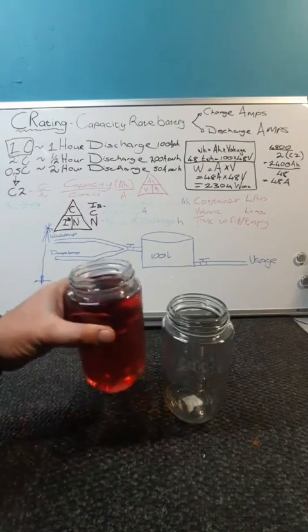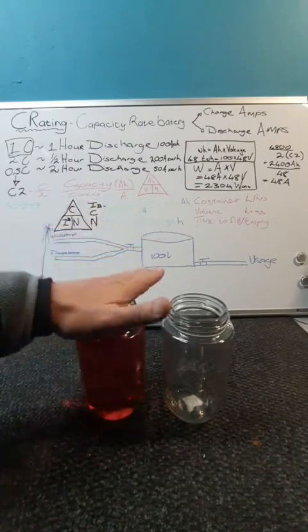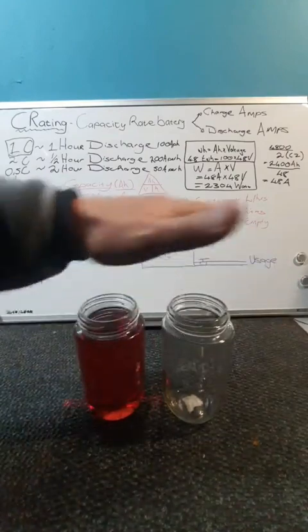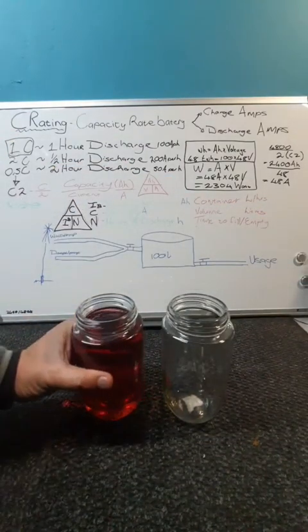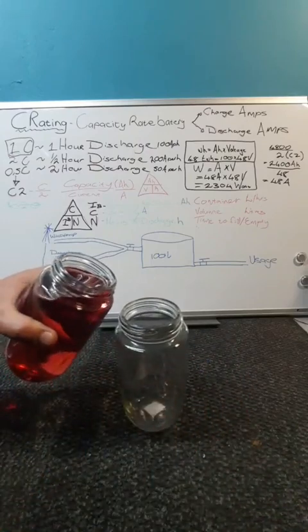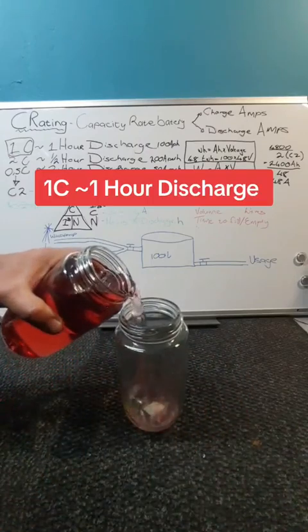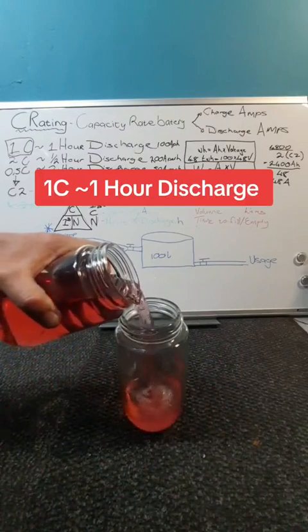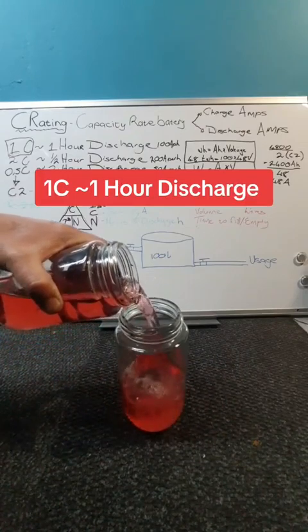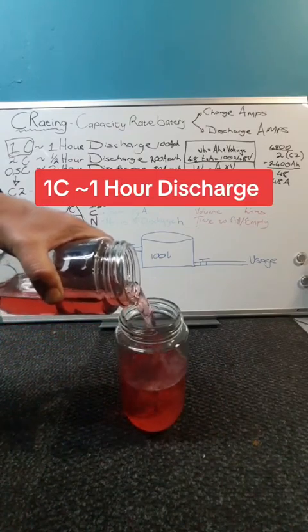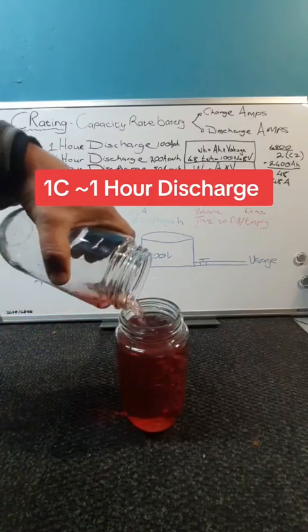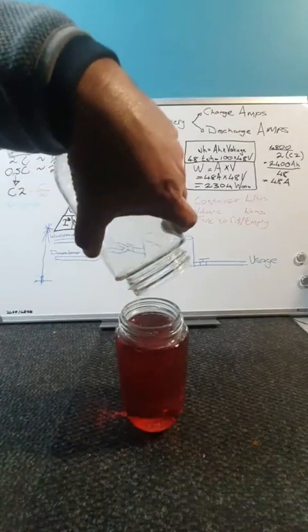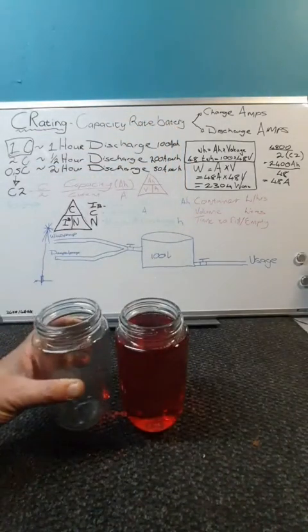If you've got a 100 amp hour battery, you can see it now as charge or discharge. If it's a 1C battery, this can go out in one hour. So let's say this is an hour - this is a 1C battery. You can charge it and discharge it in one hour, but then it's empty.